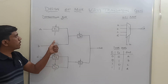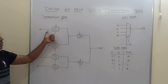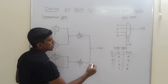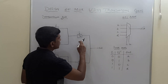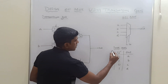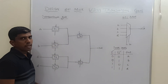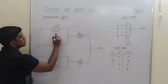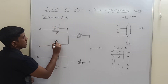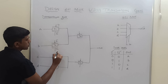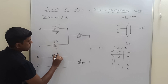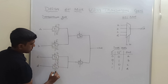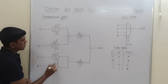Now I am going to set the control signals for the transmission gates. For the 4 transmission gates T1–T4, the control signal is S0 and S0 bar. For the 2 transmission gates T5 and T6, the control signal is S1 and S1 bar.